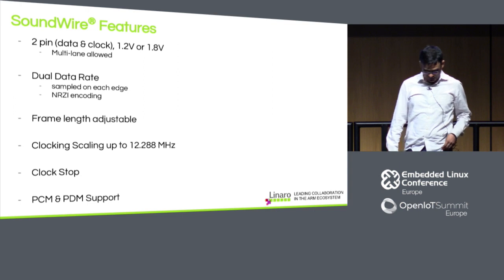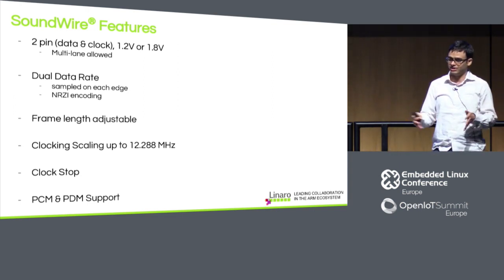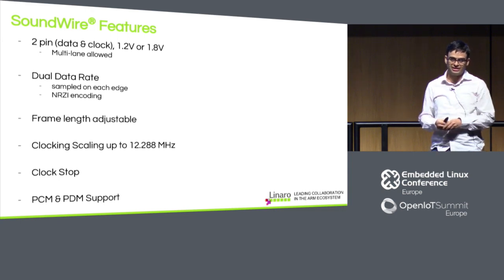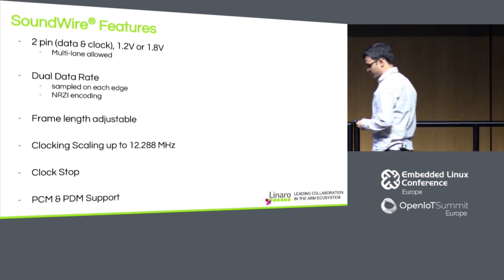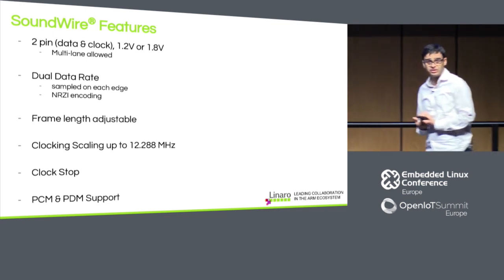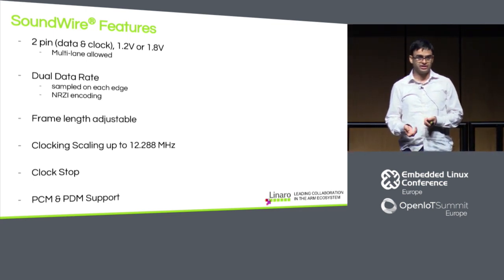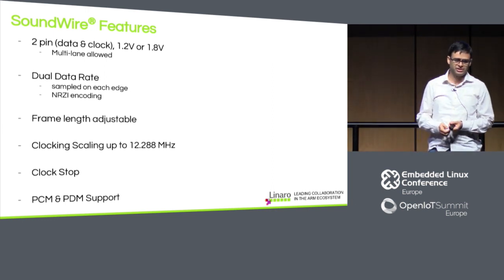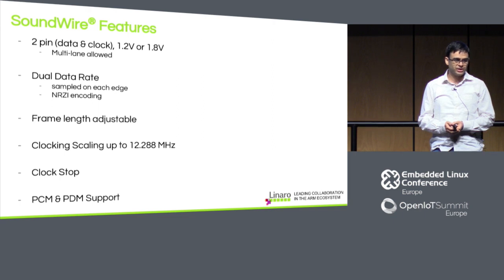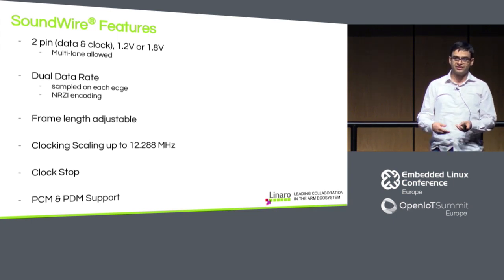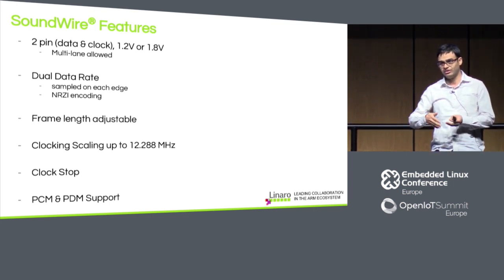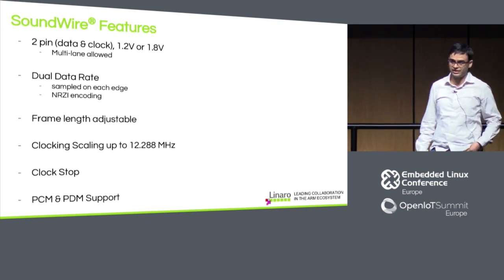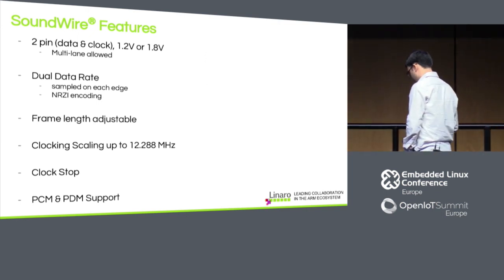Frame length is another important feature. In typical serial bus protocols, the frame has a fixed header and payload for the duration. But in audio use scenarios, bandwidth requirements are not static — they change when you start a capture session or a Bluetooth chime comes in. So SoundWare supports variable frame length: you can change it on the fly at runtime without sacrificing audio quality.